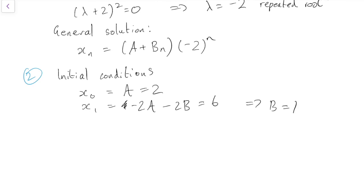By solving those simultaneous equations, and thus the solution is x_n equals A, which is 2, plus B, which is 1 times n, times (-2)^n. And that's the solution.